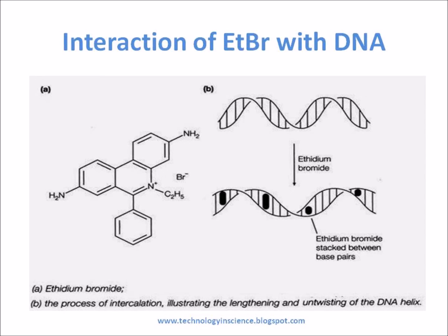The fluorescent yield of the DNA–ethidium bromide dye complex is many folds higher than the free dye, so it is advantageous in visualizing the DNA on gels. Approximately 1 ethidium bromide molecule will get intercalated per 2.5 base pairs, resulting in a 20-fold increase in fluorescence when intercalated.